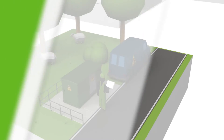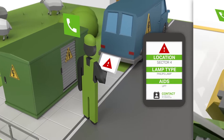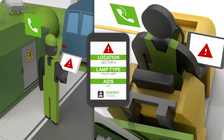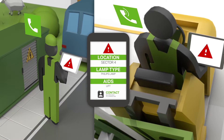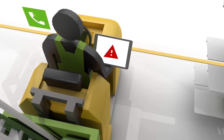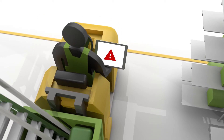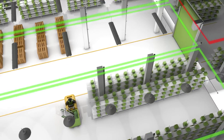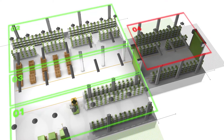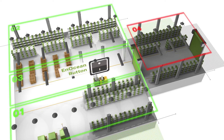If, for example, a lamp fails, the system displays a detailed error diagnosis. This tells you which lamp, the exact type, location, and at what height is defective, and what you need to fix it.